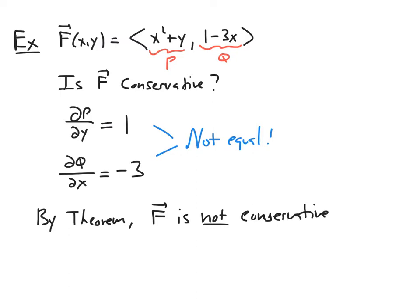In other words, there is no potential function lowercase f which has a partial derivative with respect to x equal to x² + y, and a partial derivative with respect to y equal to 1 - 3x. We can often use this theorem to show vector fields are not conservative, but we cannot use it to show that a vector field is conservative. To do that, we need to do a little more work.